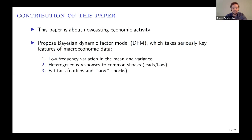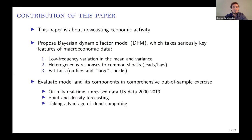We allow individual series to load on the common factor with a lag, which essentially gives richer dynamics, and we incorporate the possibility of fat-tailed observations. We then put the model and the novel components to the test out of sample, in a very ambitious formal evaluation exercise on fully real-time unrevised vintage data from the US over a period of 20 years. This involves re-estimating the model thousands of times, which we make feasible using a very efficient algorithm and by relying on cloud computing.